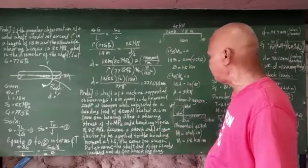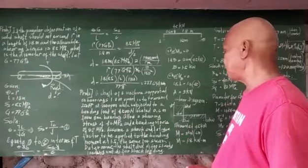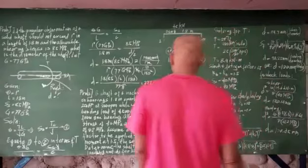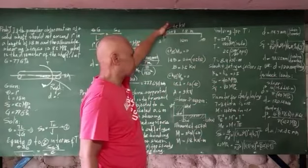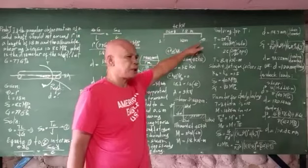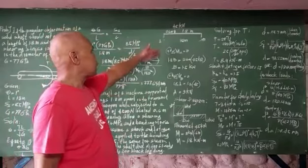Assume a shaft and fatigue factor to be applied to the bending moment at 1.5, and the same for shear. Determine the shaft diameter for letter A for steady loading and for letter B for shock loading. We have here the shaft loaded at 4.5 kilo newtons, which is 0.6 meters from A, and 1.2 meters from B, for a total length of 1.8 meters.